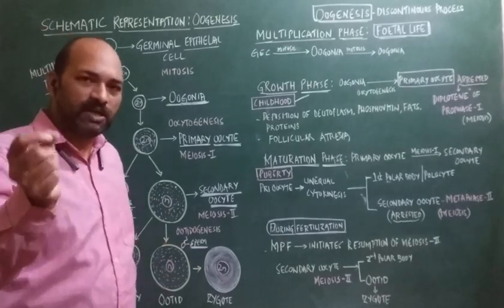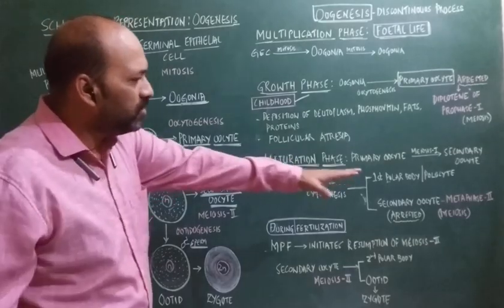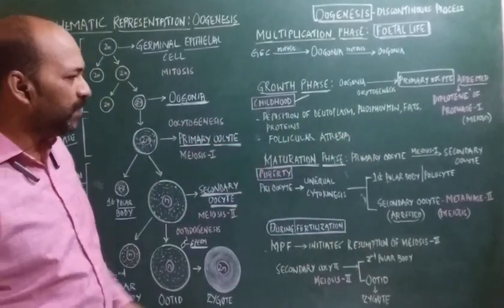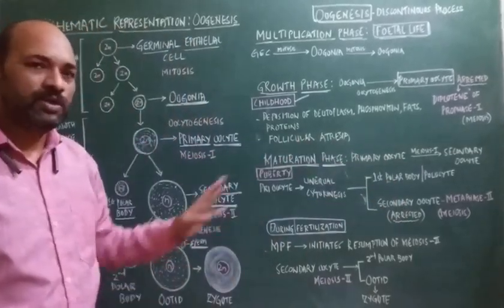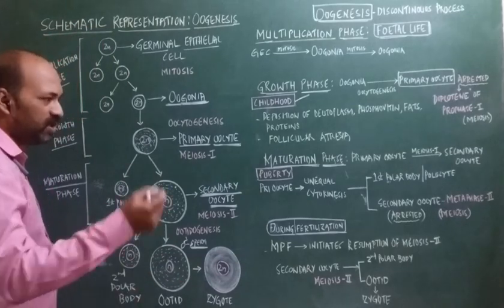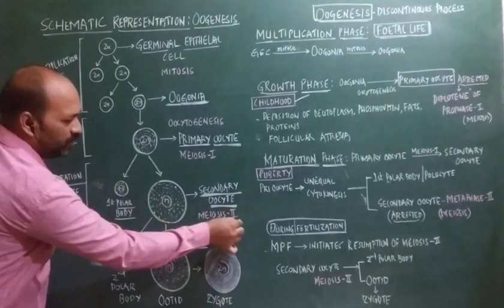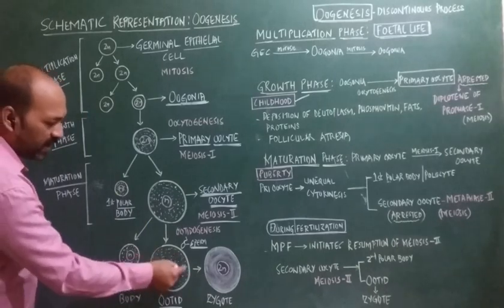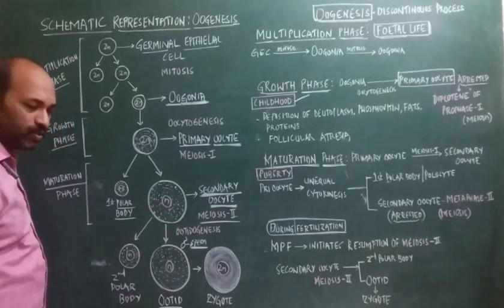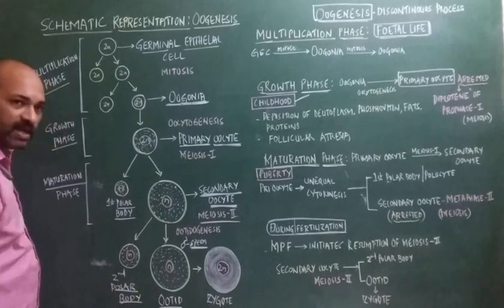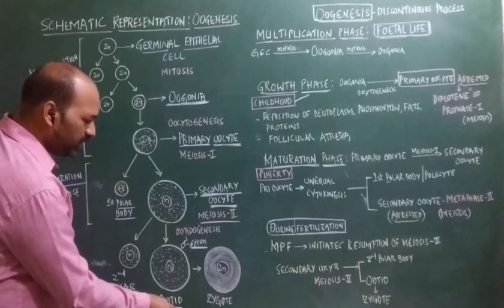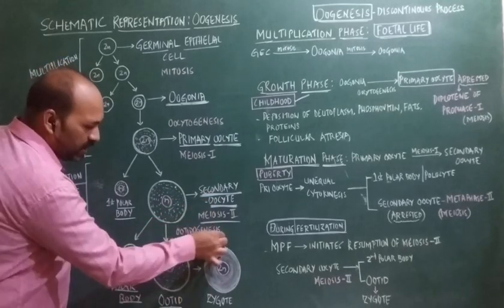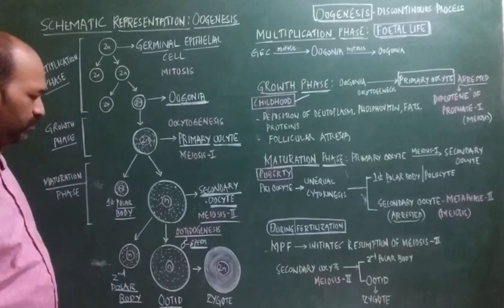The sperm brings the maturation promoting factor, thereby causing resumption of meiosis II in the secondary oocyte. The secondary oocyte then enters anaphase II and telophase II, and again gives rise to two cells via unequal cytokinesis. The larger cell with abundant cytoplasm is called the ootid, and the smaller cell is the second polar body. This entire process of conversion of the secondary oocyte into an ootid is called ootidogenesis.